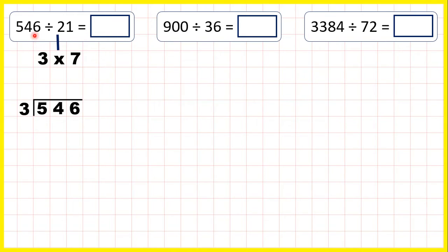So we can start by dividing 546 by 3. 5 divided by 3 is 1 remainder 2, 24 divided by 3 is 8, and 6 divided by 3 is 2.